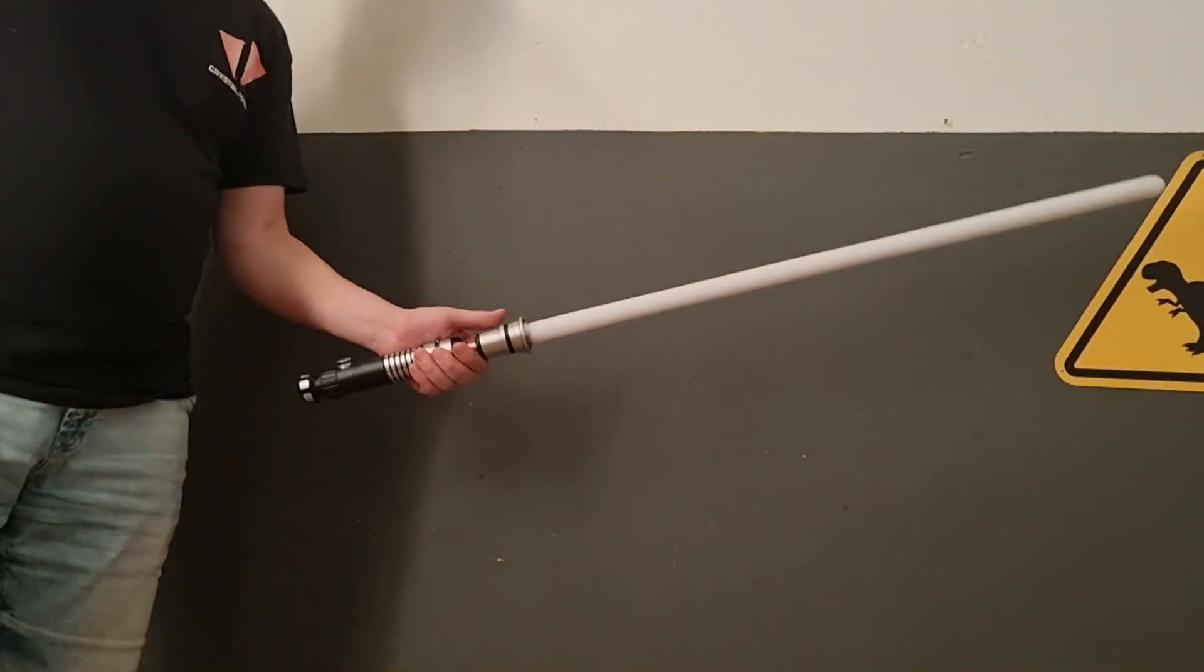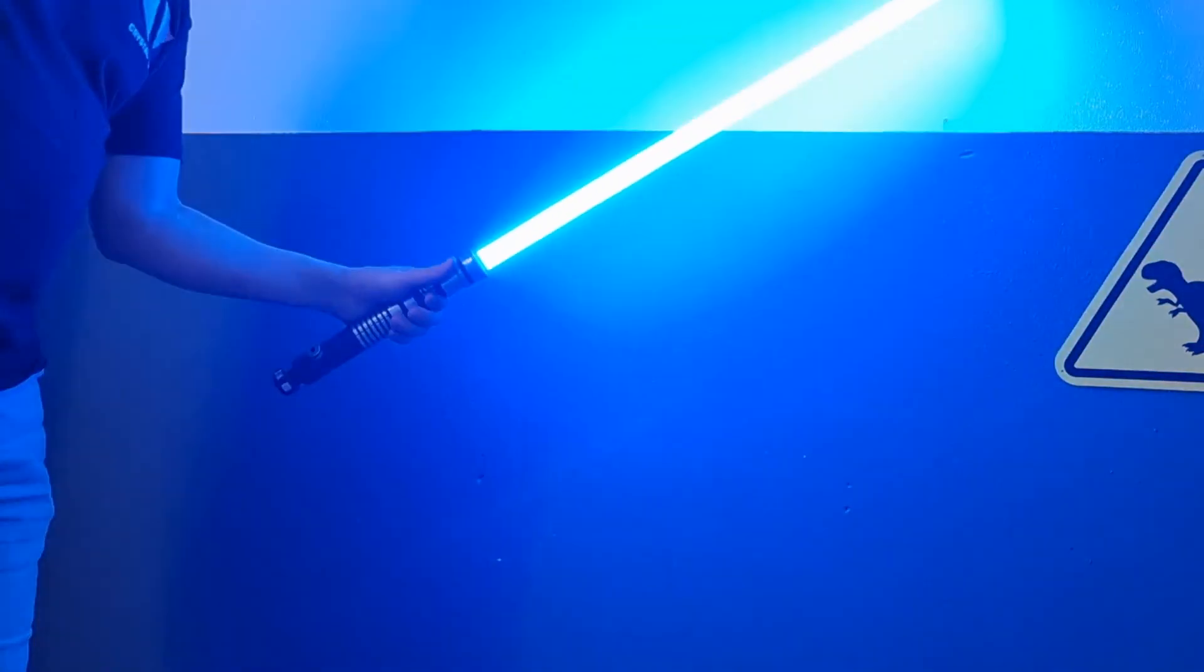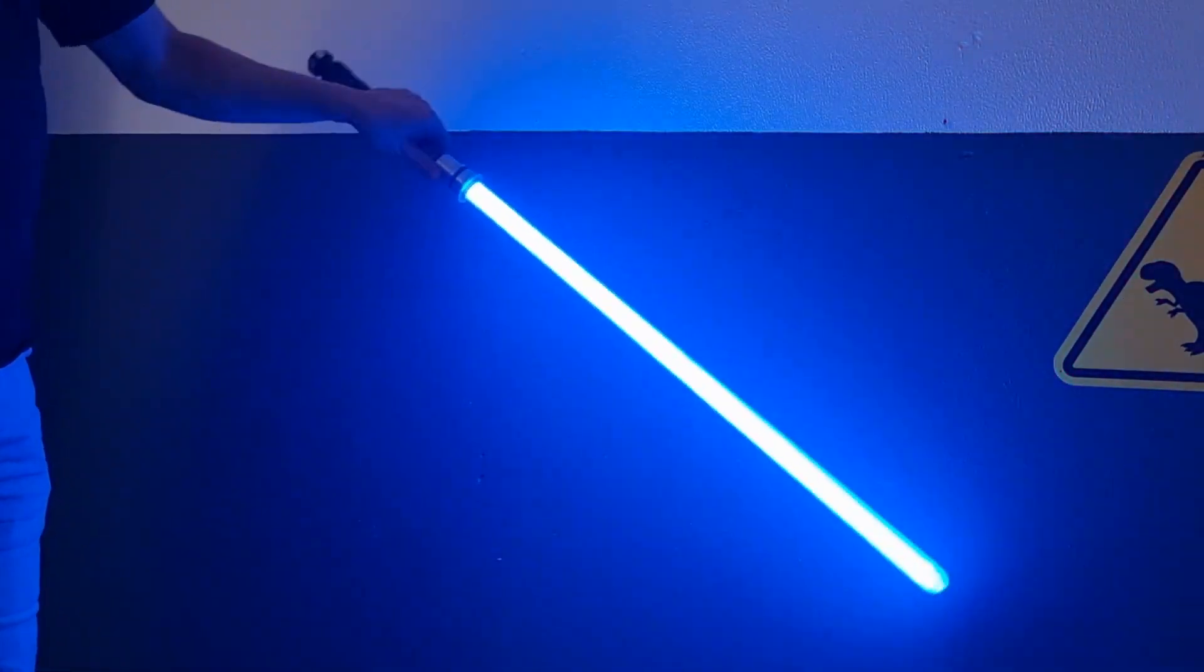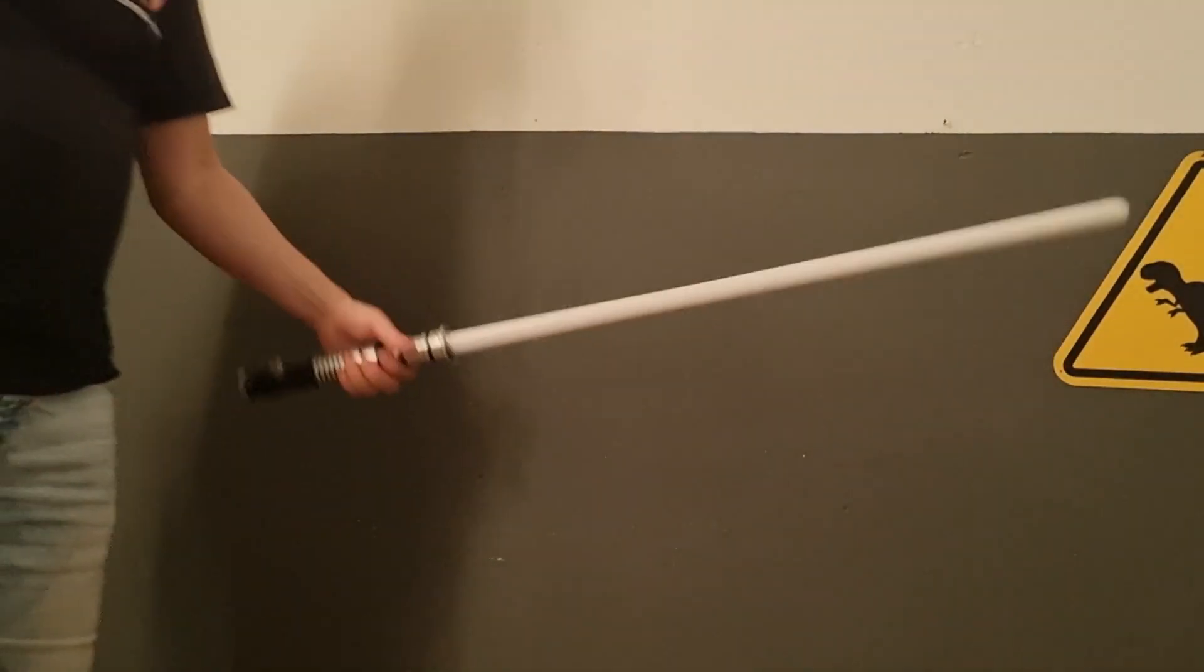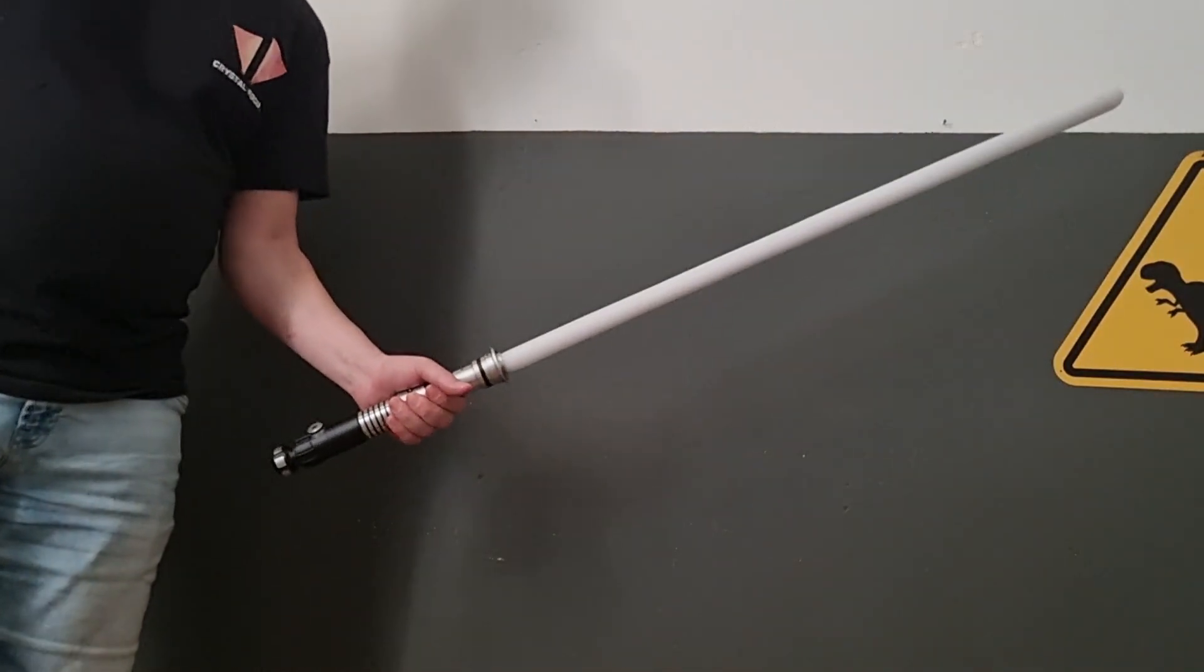That combined with the threshold to say, I really need to twist really hard before I want the saber to ignite. That can give you some excellent control over the twist on and twist off function. I hope this helps.